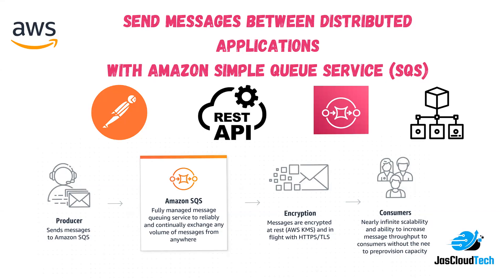Hi there, welcome to my channel. In today's video I'll be discussing how we can utilize Amazon SQS, the Amazon Simple Queue Service, and how we can send messages between distributed applications. There is a concept of producers and consumers, we can have encryption, and it is a fully managed message queuing service that will help with reliability and continuation of exchange of messages between our applications.